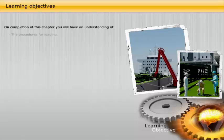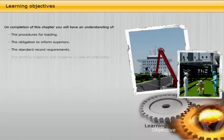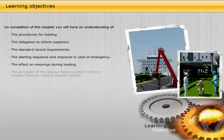On completion of this chapter, you will have an understanding of: the procedures for loading, the obligation to inform superiors, the standard record requirements, the alerting sequence and response in case of emergency, the effect on moorings during loading, and the principles of the Vapor Return System.